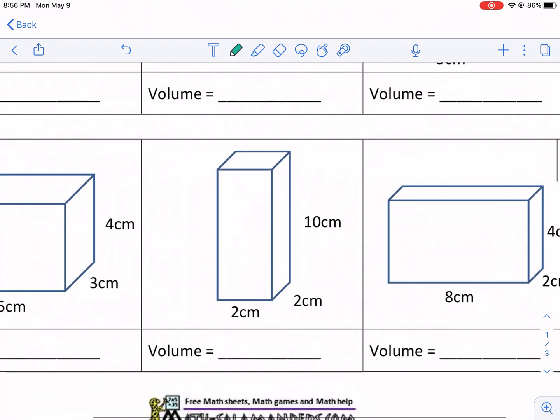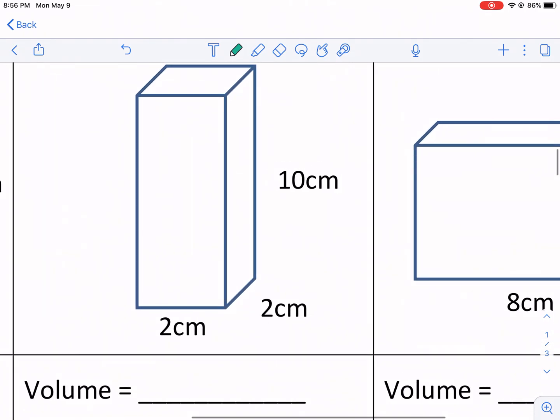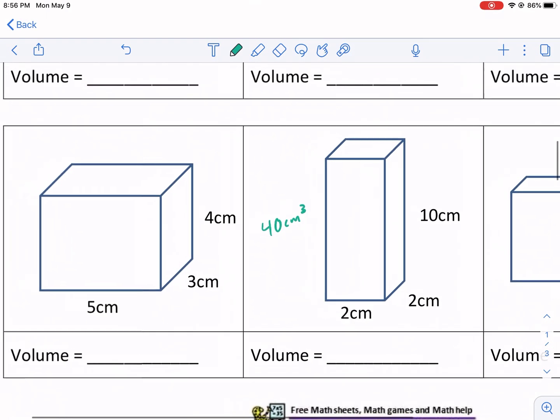We'll do a couple more. We'll do this one. We do 10 times 2 times 2. That will give us 40 centimeters cubed cubic centimeters. Then here's the one. 5 times 4 is 20 times 3 is 60 centimeters cubed. I don't want to give all the answers away. That'd be too easy.